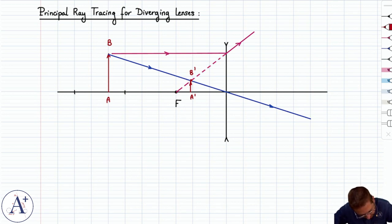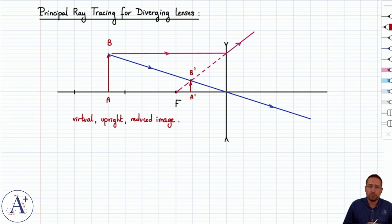So you get a virtual upright reduced image. And it doesn't matter how far the object is of the lens, you will always get a virtual upright reduced image in the case of a diverging lens.